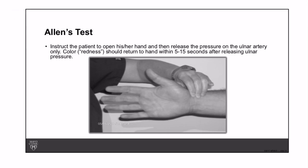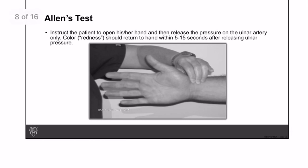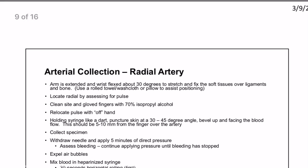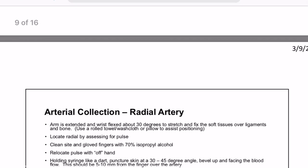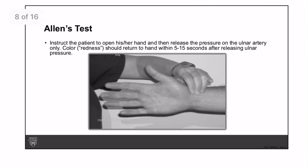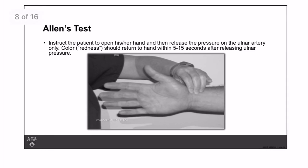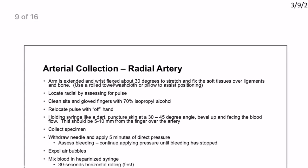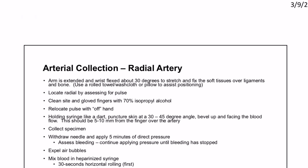In the final phase, instruct the patient to open their hand, then release pressure on the ulnar artery only. If the hand turns from pale to red within 5 to 15 seconds, the ulnar artery is functioning normally — collateral circulation is confirmed and you are good to proceed with radial artery ABG collection.